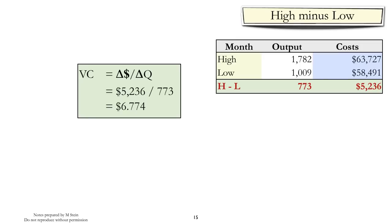To calculate variable costs, we divide the difference in cost by the difference in quantities and end up with a variable cost per unit of $6.774.